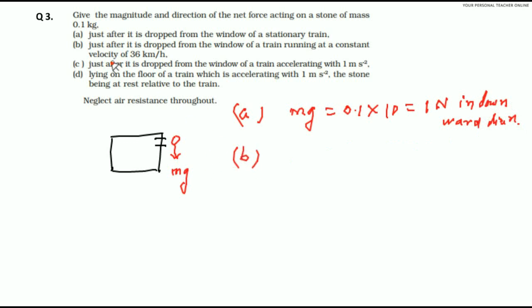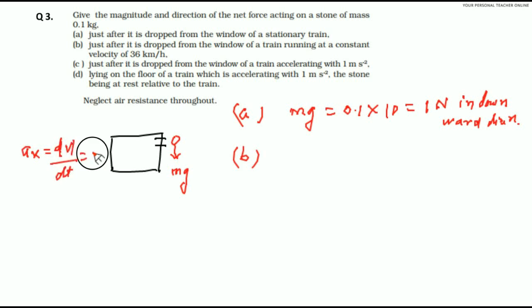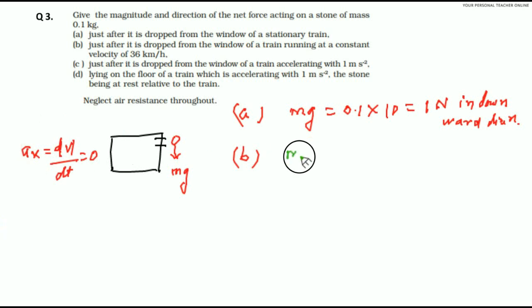Part B: just after it is dropped from the window of a train running at constant velocity. Constant velocity means acceleration in the horizontal direction, dv by dt, is again 0 because constant velocity is given. So, in the second case again mg acts in the downward direction, that is 1 Newton.